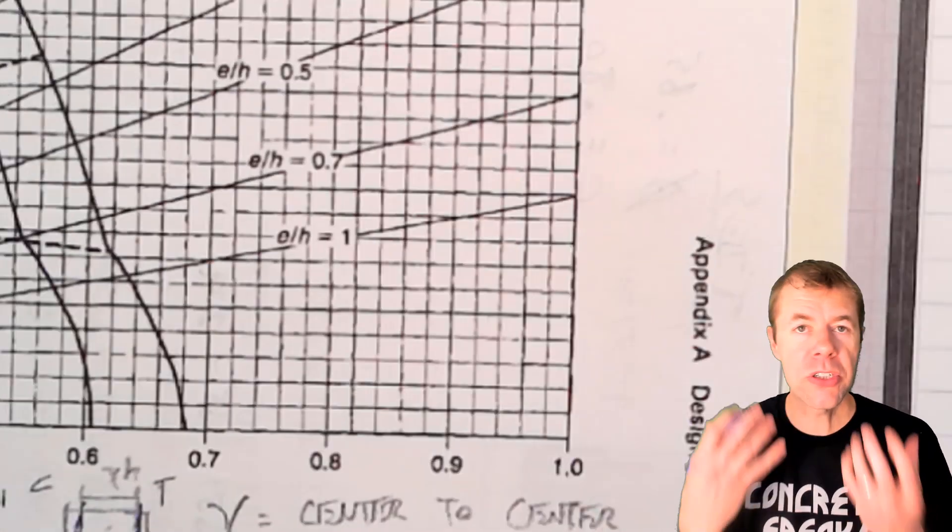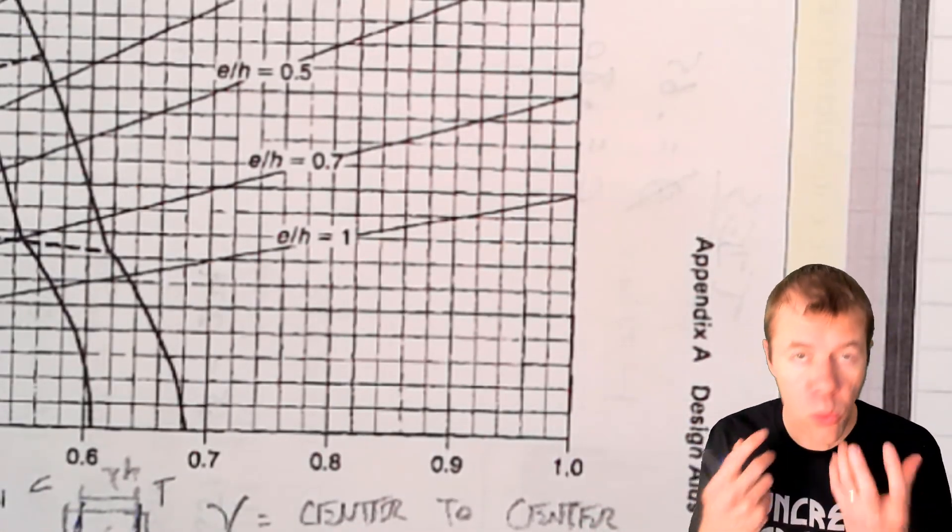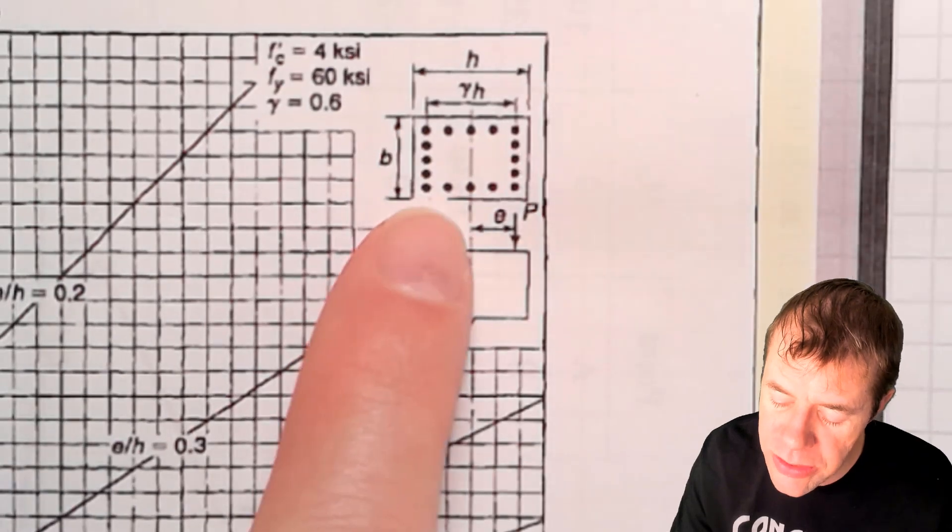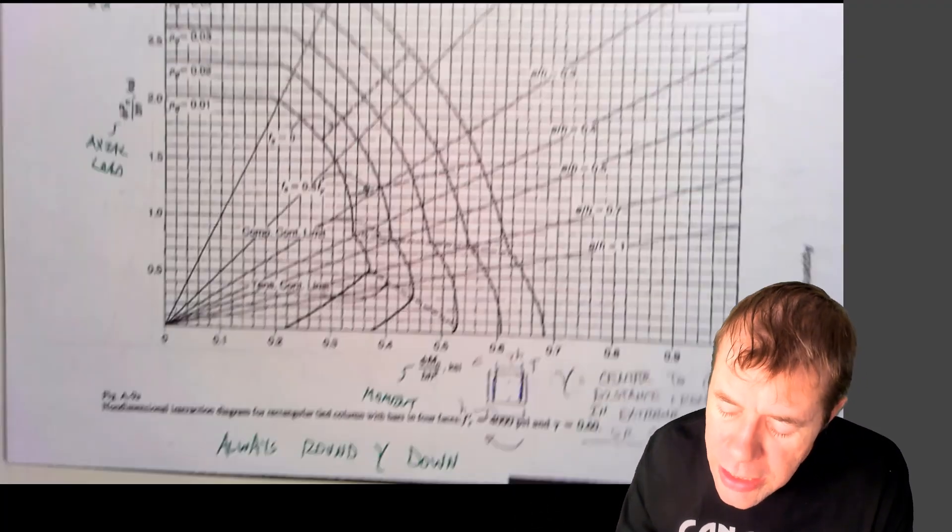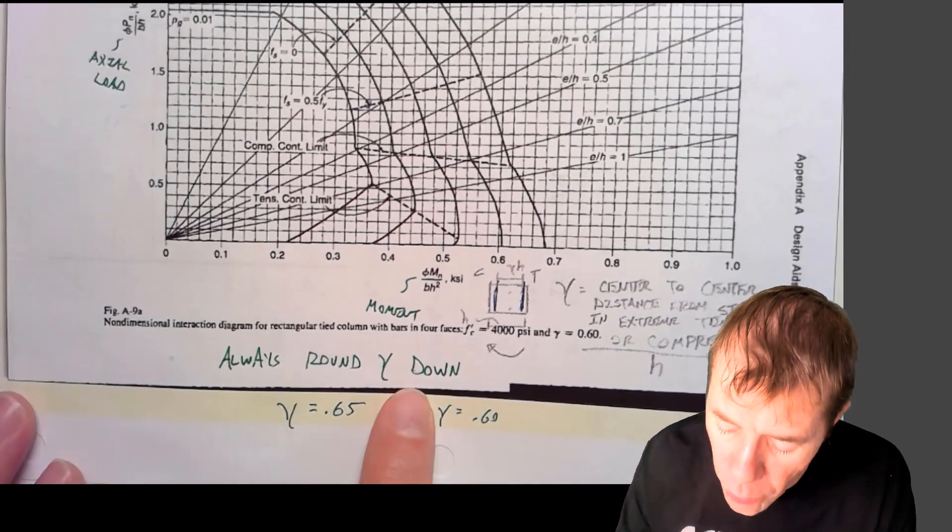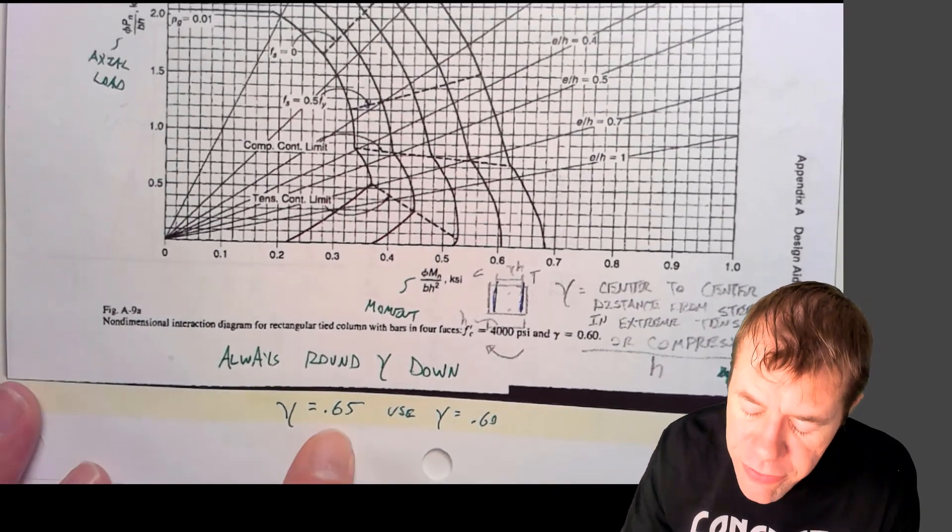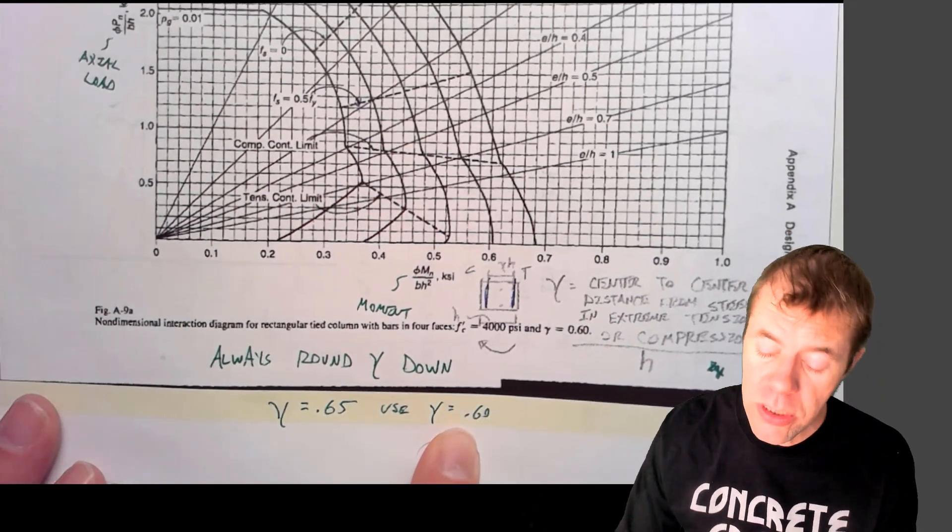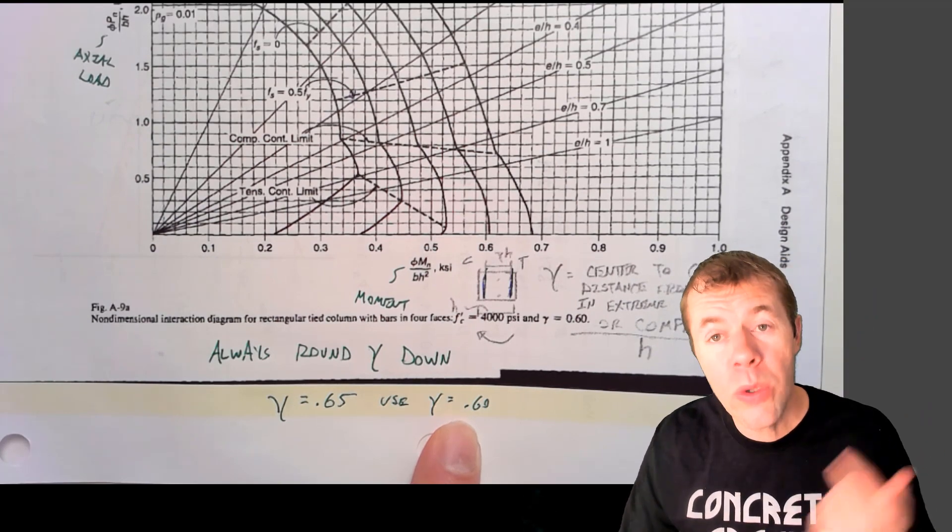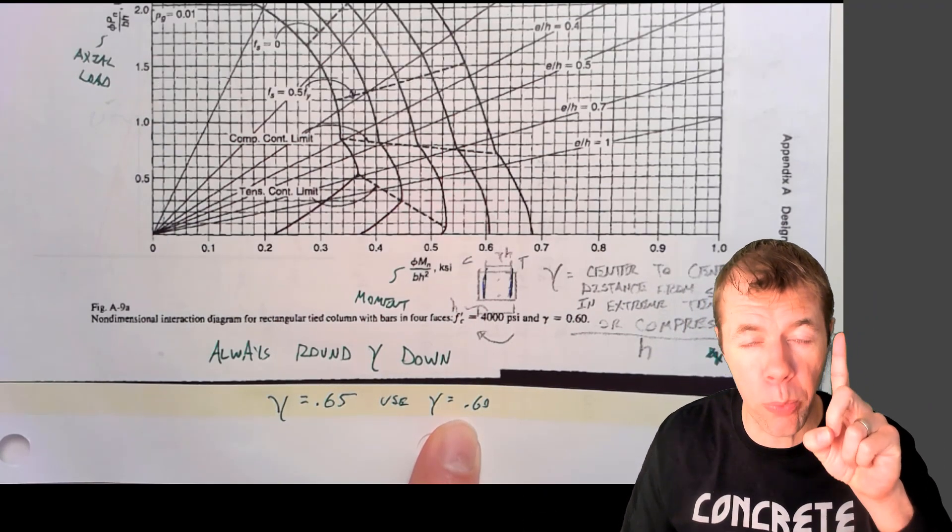So it's kind of the percentage or the ratio of how close our steel is to the outside. Some people say, well, don't we want our gamma to be high? We want our gamma to be whatever our gamma is. We want it to be whatever it is and nothing more. Now one tip with gamma, when you're using these diagrams, is you always round down. That means if I found a gamma of 0.65, but my nearest chart is 0.60, and maybe there's another one at 0.7, I always round down. You never round up with gamma.